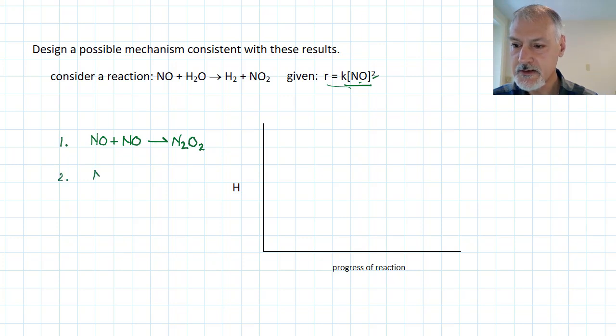Now, in my proposed mechanism, I'm going to say that intermediate species breaks apart, producing one of my desired products, which is nitrogen dioxide. And at the same time produces a nitrogen. In step three, that nitrogen then collides with a water molecule, producing another nitrogen oxide and hydrogen.